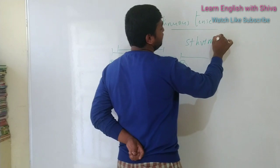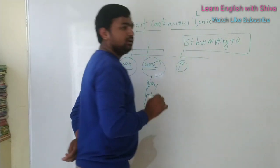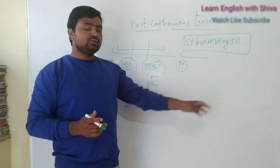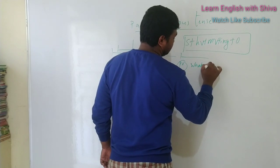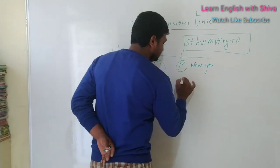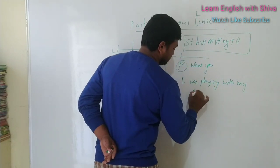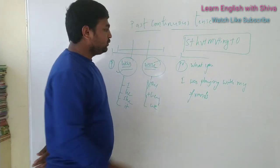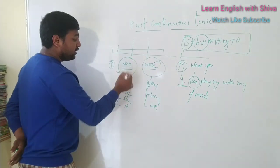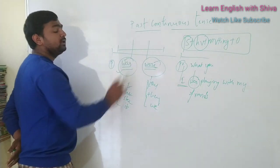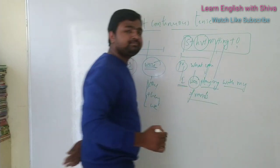The syntax is: Subject + helping verb + main verb + suffix '-ing' + object. Let's take the question from the beginning: what were you doing yesterday when I called you? The answer is: I was playing with my friends. Here, 'I' is the subject, 'was' is the helping word — because for I, he, she, it we use 'was' — and 'playing' is the main verb with '-ing' added, and 'with my friends' is the object.